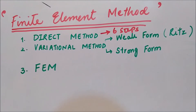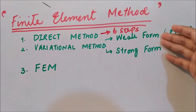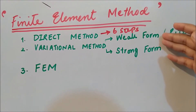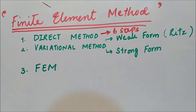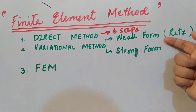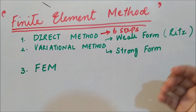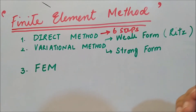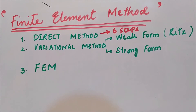After completing the direct method we will look at the variational method. In the variational method we have two main divisions: weak and strong. In the weak form we use differential equations and integration in order to weaken the differentiability requirement, while the strong form does not require weakening the differentiability.